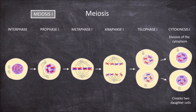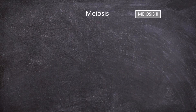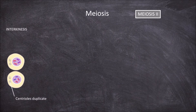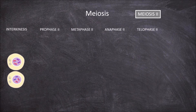This takes us into the second round of meiotic division known as meiosis 2, where both daughter cells created in meiosis 1 go through it. Before meiosis 2 occurs there is interkinesis — there is no DNA replication during interkinesis, but the centrioles still need to duplicate and form the centrosomes. There are four phases in meiosis 2: prophase 2, metaphase 2, anaphase 2, and telophase 2.